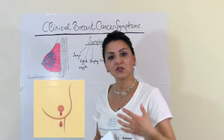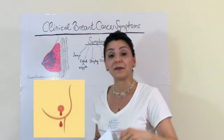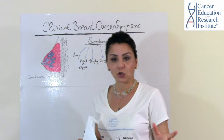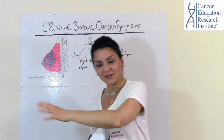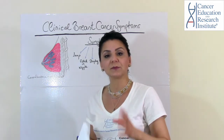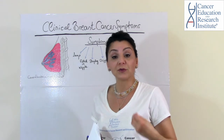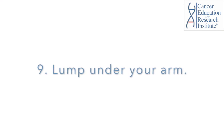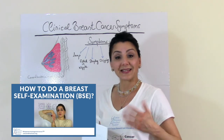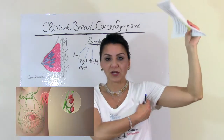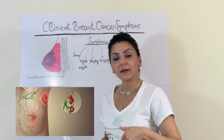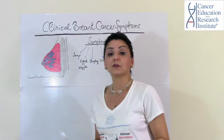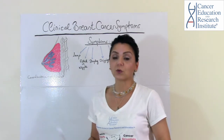If you have a spontaneous discharge from the nipple that is other than milk, you must see the doctor. For all of these symptoms I just explained, you must see the doctor — again, after one more menstruation cycle to confirm the changes. But if you have any discharge from your nipple that is not milk, you must see the doctor immediately. Also, as explained in our breast self-examination video, you must check under your arms for any kind of lumps. If you find a lump underneath your arm, you must also see the doctor — this is also a breast cancer symptom.